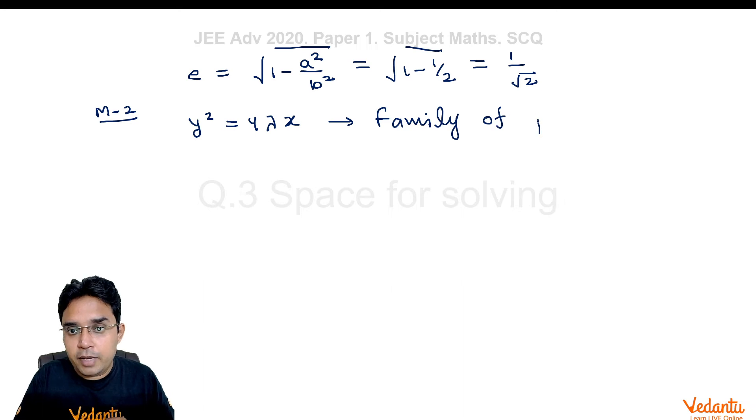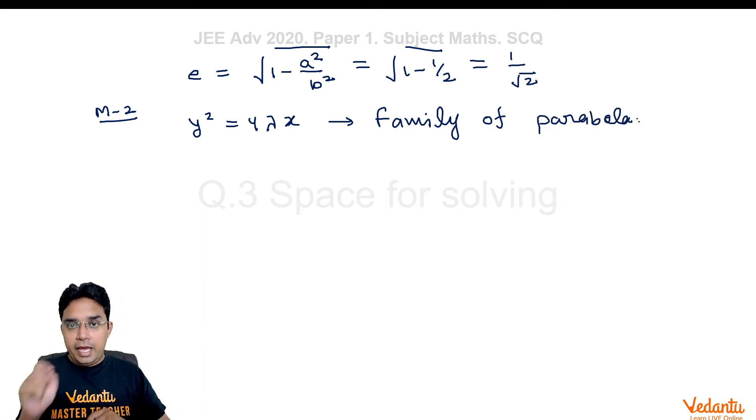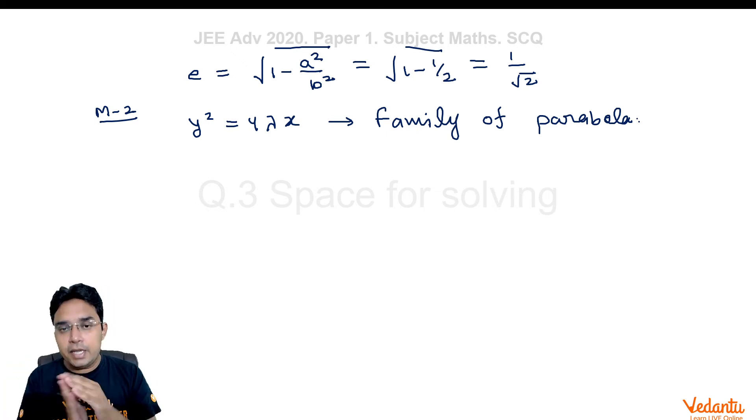We have a parabola y² = 4λx which can be considered as family of parabolas. Family of which parabolas which are having axis as x-axis, vertex at origin. If you change values of λ you will get a variety of parabolas. This is representing all those family of parabolas.